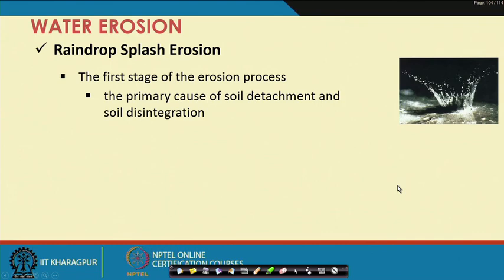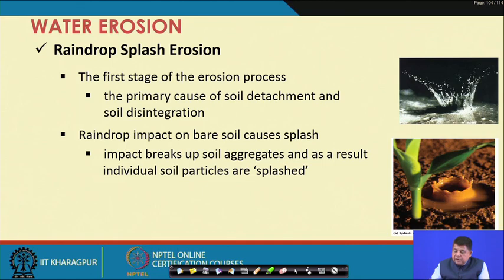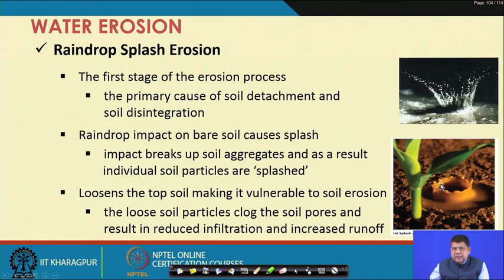The first type is raindrop splash erosion — it is the first stage of the erosion process and the primary cause of soil detachment and disintegration. When rain occurs, raindrops impact the bare soil with high kinetic energy, causing a splash. The raindrop impact breaks up soil aggregates and individual soil particles are splashed away. These loose particles can subsequently be carried away by flowing water.